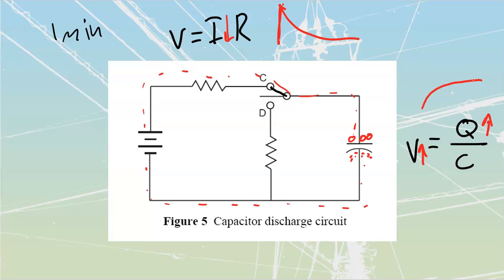It takes five time constants defined by RC to fully charge the cap. Once fully charged, the switch — which must be automatic — opens and transfers over to the discharge path.